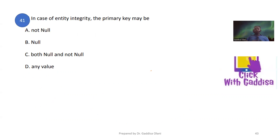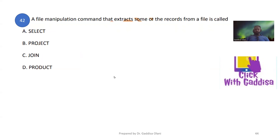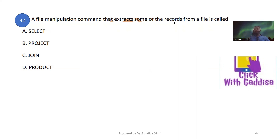The primary key must not be duplicate. A file manipulation command can extract sample data — that is a raw extract. A data definition language command is used to select and extract data.